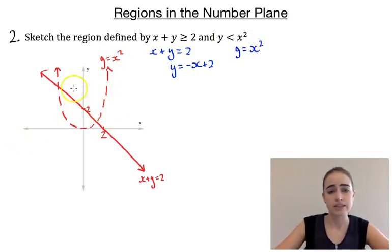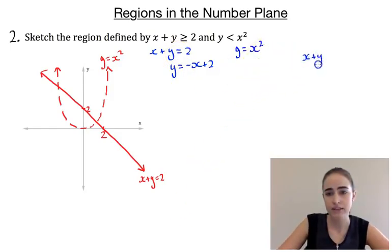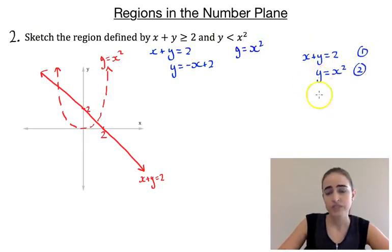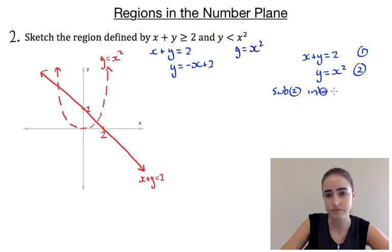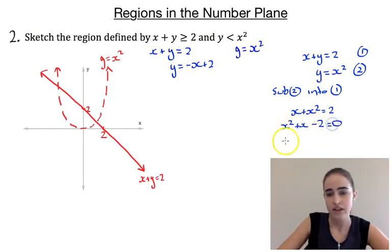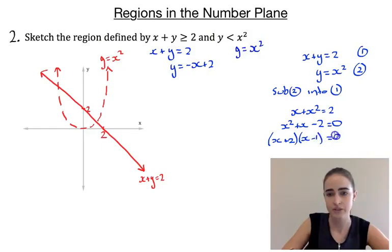Now we need to figure out where these curves intersect and which side of each curve to colour in. To find the points of intersection, we solve simultaneously. We have x + y = 2 (equation 1) and y = x² (equation 2). Substituting equation 2 into equation 1 gives x + x² = 2, which rearranges to x² + x - 2 = 0. Factorising: (x + 2)(x - 1) = 0, giving x = -2 or x = 1.